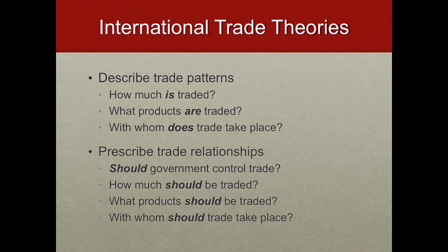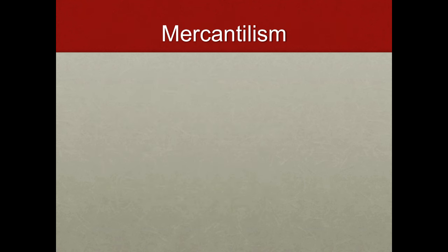We'll be looking at those prescriptive theories as well. Let's start out with a prescriptive theory: mercantilism. Mercantilism is a theory that was prevalent from about the 1500s through the early 1800s. It's really more of a mindset than a theory — it's how most people, both government leaders and business people, and certainly trade theorists, thought about trade during that time period.